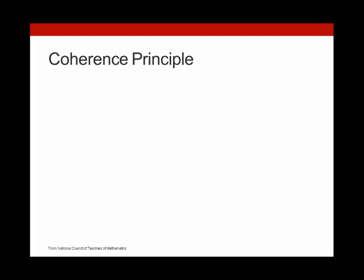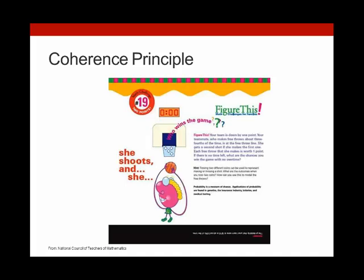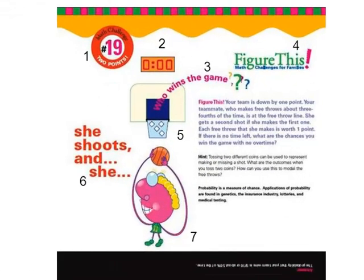The coherence principle asks us to exclude material that does not pertain to the purpose of the lesson. This seems obvious, but many times we see learning materials that contain graphics that only serve a decorative purpose. Material that is not pertinent to the learning task is distracting and increases load. As an example, take a look at this graph — there's a lot going on here. The math problem that students need to solve does pertain to basketball, but excluding the border, there are seven graphic elements here. Trying to make sense of them all causes extraneous cognitive load and is a distraction from the purpose of the learning task. According to the coherence principle, a much simpler graphic might be better.